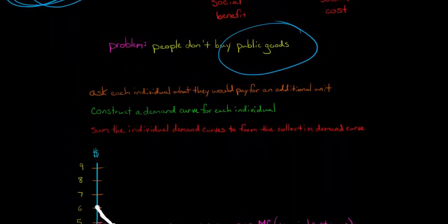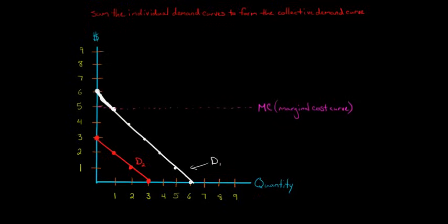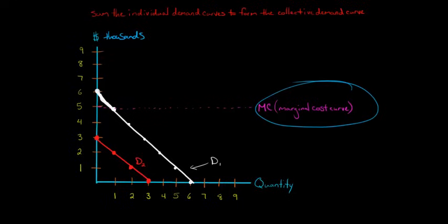Let's plot this out so it's a little less abstract, using the streetlight example. The values are in thousands of dollars — so 1,000, 2,000, 3,000 — and let's say the marginal cost curve is at $5,000. That's the marginal cost of a streetlight. And we've got two people in this neighborhood.